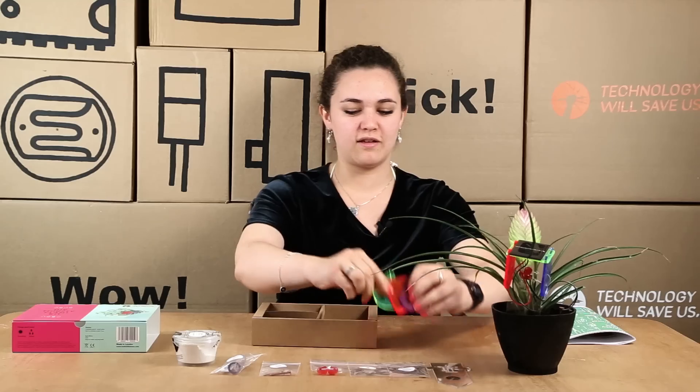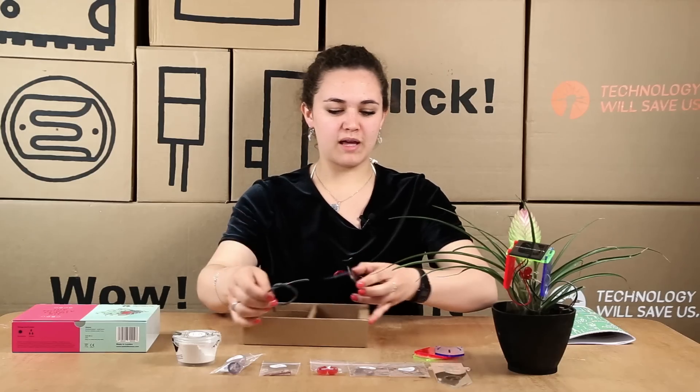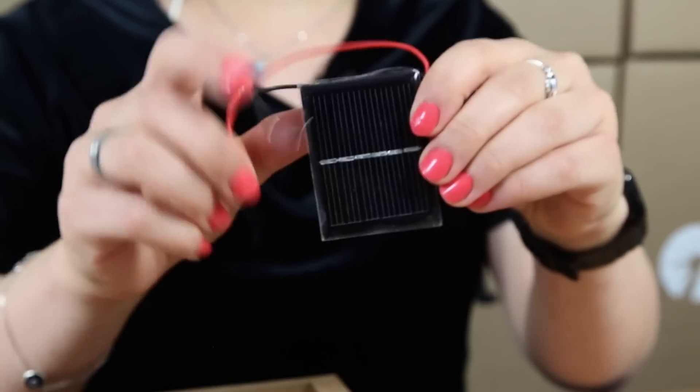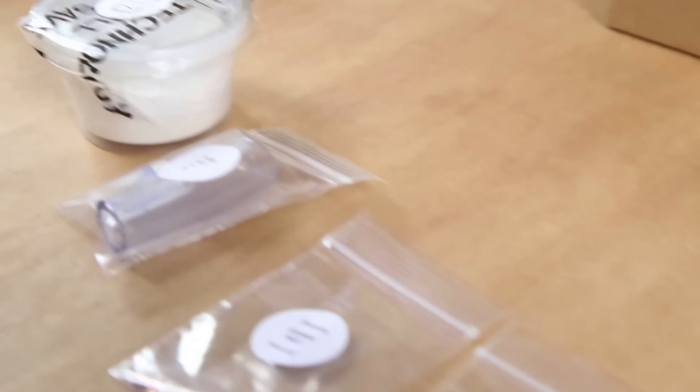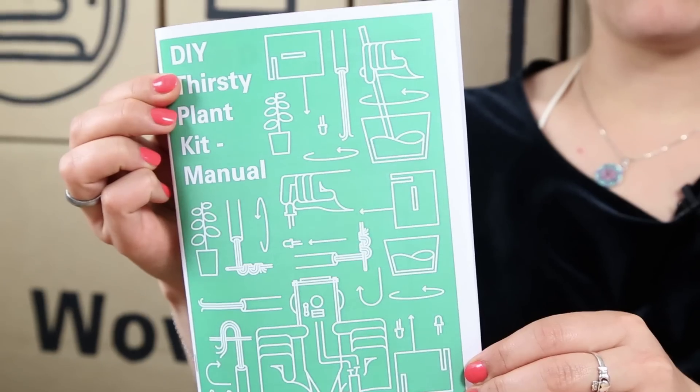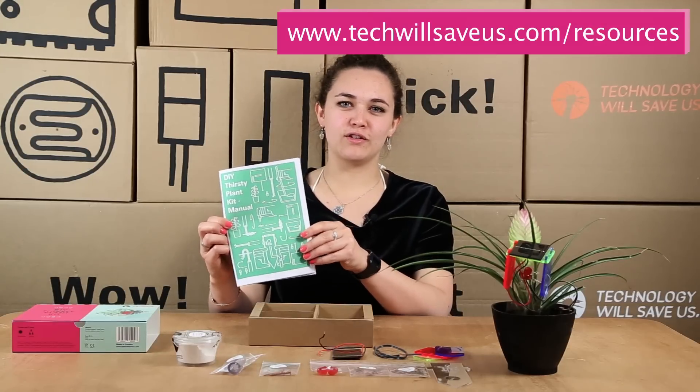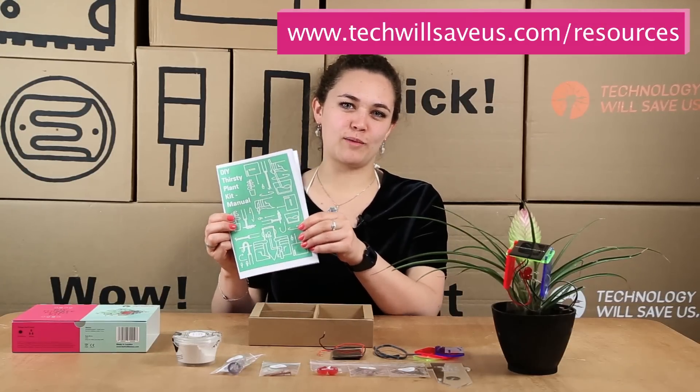So this is the waterproof casing, and sensor cable which is just copper cable, and your solar panel. So let's put it all together. We're going to follow our step-by-step guide. It's the Thirsty Plant Manual and you can find this on the resources page of our website.